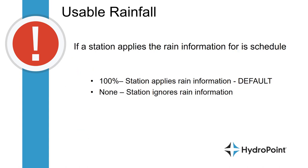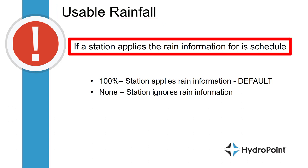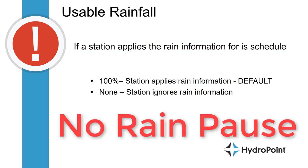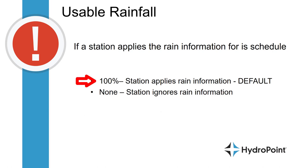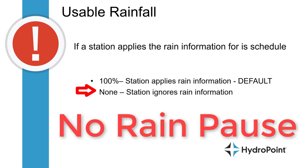Now we want to talk about a programming feature called Usable Rainfall. This feature defines whether a station should be listening to the controller rain information or not. In some cases you want an irrigation station to irrigate in spite of local rain — so even if the rain sensor kicks on or the HydroPoint Climate Center sends a rain pause to that controller, during overseeding you may want to water even in spite of local rain information. If you want your station to continue listening to the rain sensor and rain pause, leave it at 100% usable rainfall. If you want it to disregard the rain information, change that setting to None.